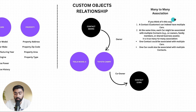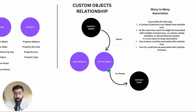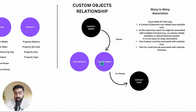In a true many-to-many association, one contact can be associated with multiple cars — because Mark could have both a Tesla Model S and a Toyota Camry. He can be linked as owner to both objects. And if he shares a car with his wife Lisa, he can still be listed as owner of the Toyota Camry while Lisa is the co-owner. That is how we can create complex relationships using custom objects in Go High Level.